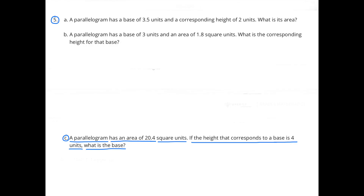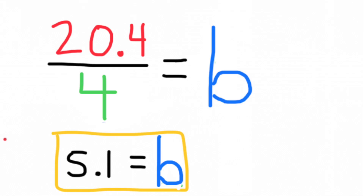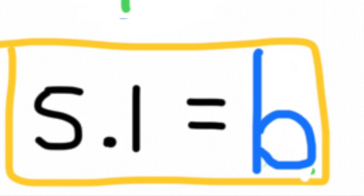Number 5C: A parallelogram has an area of 20.4 square units. If the height that corresponds to a base is 4 units, what is the base? We know base times height equals area. The base is unknown, the height is 4, and the area is 20.4 square units. We divide 20.4 by 4 to find the base. 20.4 divided by 4 is 5.1. The base is 5.1 units.